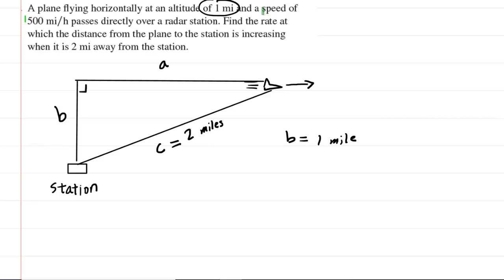We're also told that the airplane is traveling at a speed of 500 miles per hour. So consider the length of this line right here. And as the airplane travels horizontally, the length of the side marked A would be increasing in accordance with the airplane's speed. So in other words, if the airplane is moving to the right at 500 miles per hour, then A is also increasing in length by 500 miles every hour.